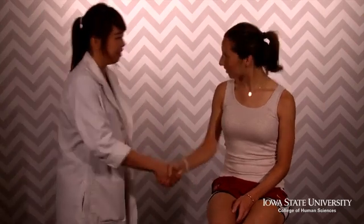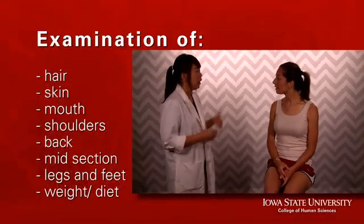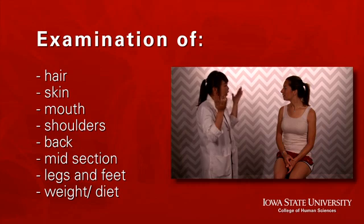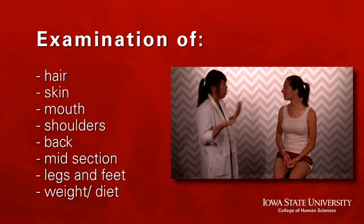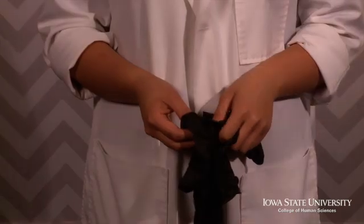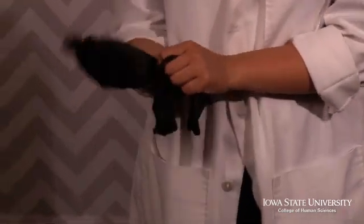Start the session by introducing yourself and asking permission to evaluate the client's muscle, fat, and micronutrient status. Explain this involves looking at the hair, skin, mouth, shoulders, back, midsection, legs, and feet, and asking questions about their weight and how they've been eating. Depending on the healthcare setting, you may wish to wear gloves.